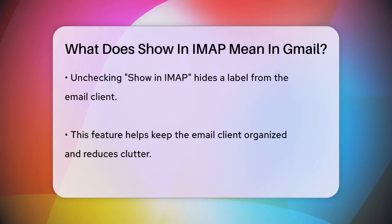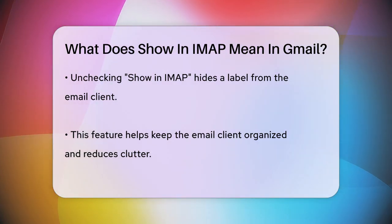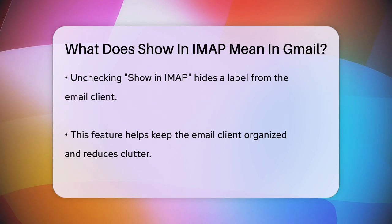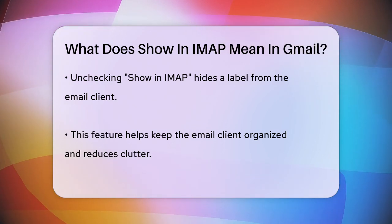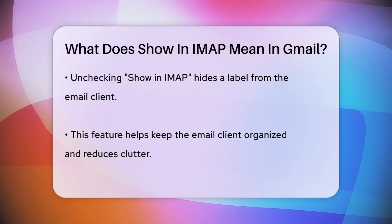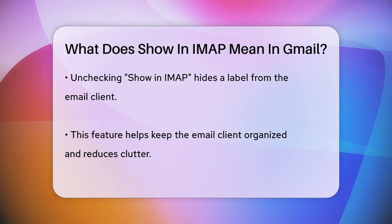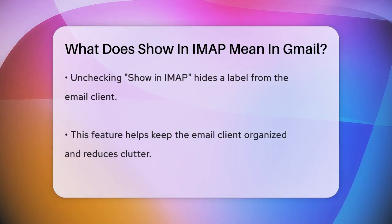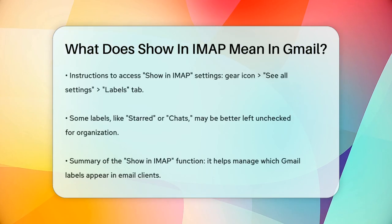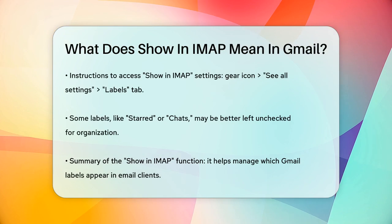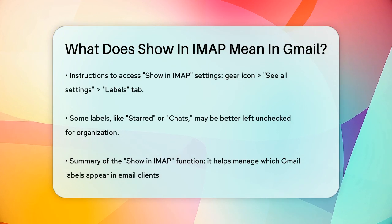To set this up, go into your Gmail settings. Click on the gear icon in the top right corner, select 'See all settings,' and then go to the Labels tab. Here, you can check or uncheck the Show in IMAP box for each label.